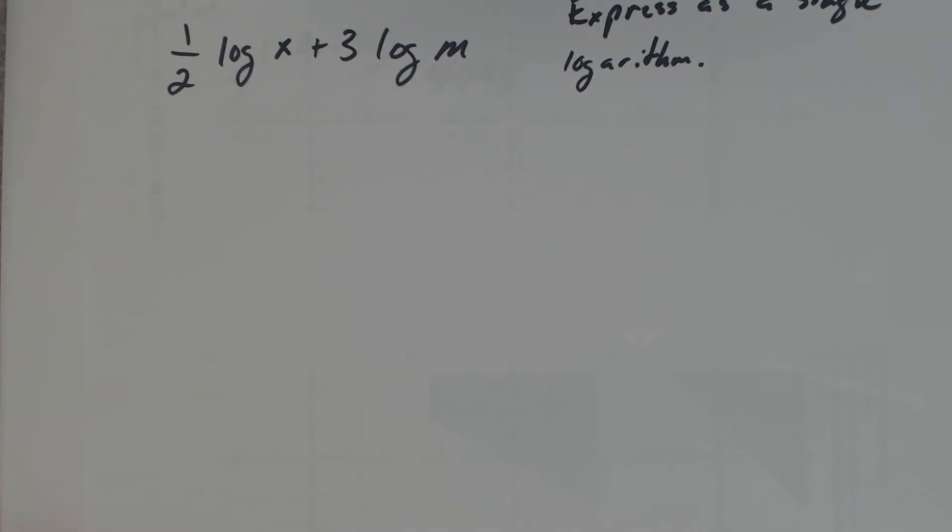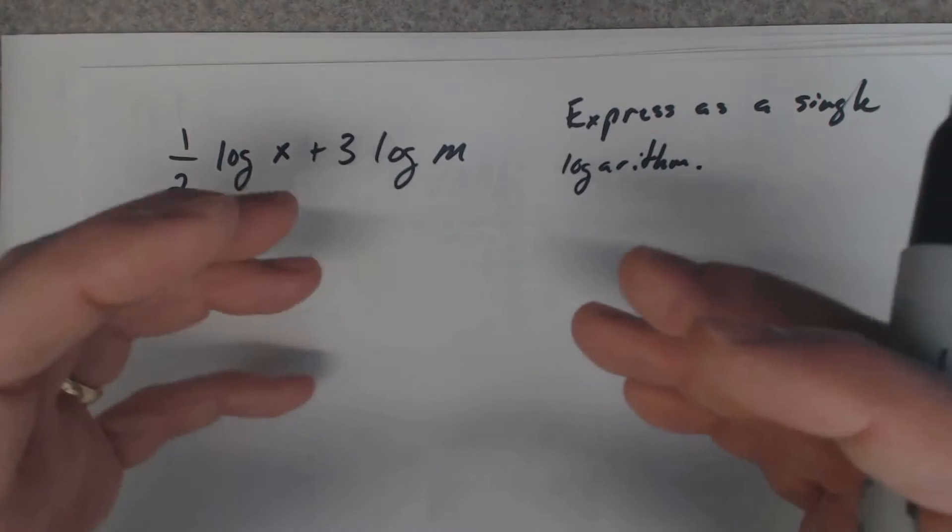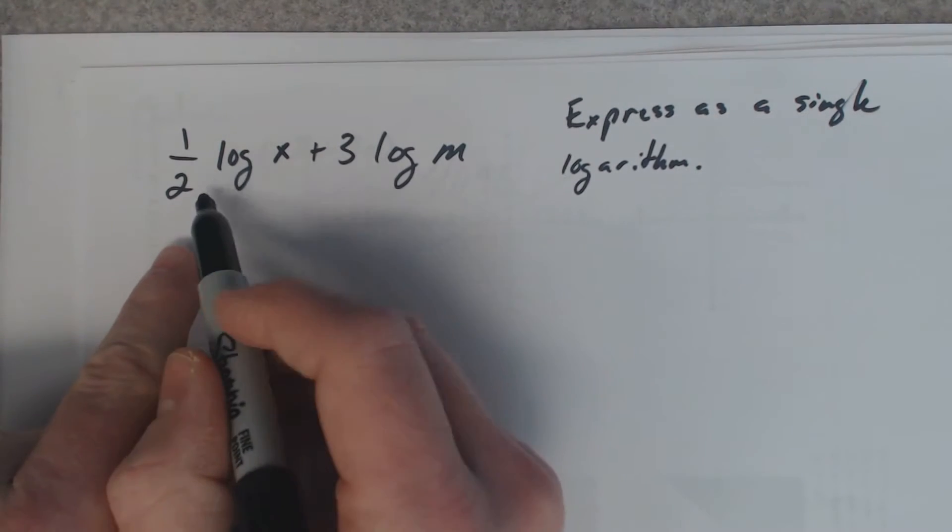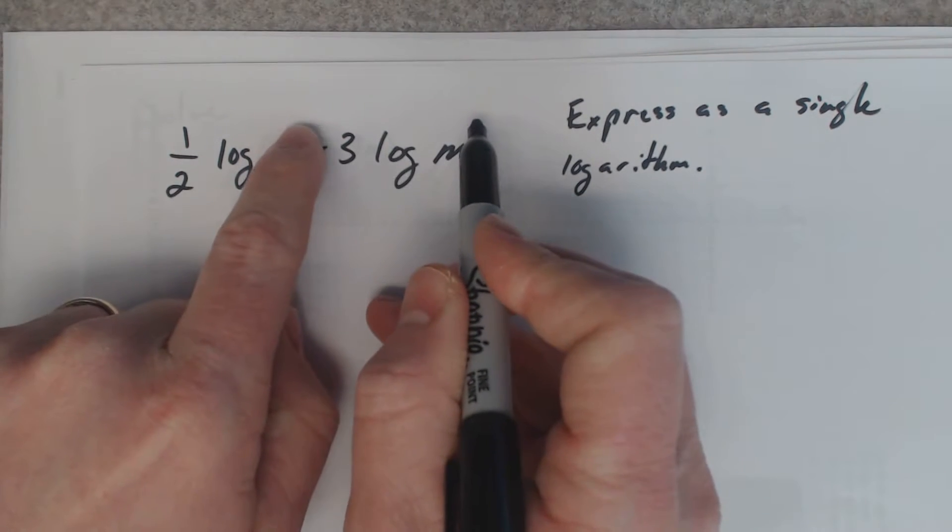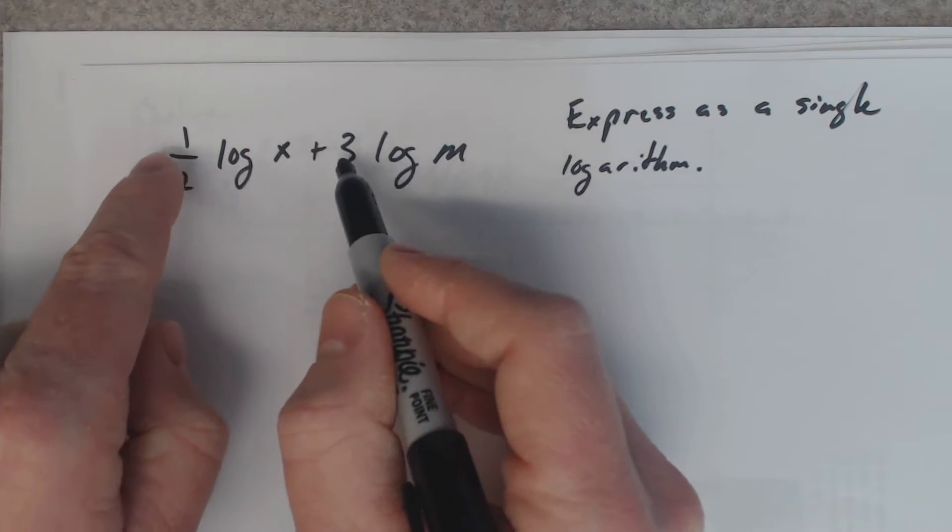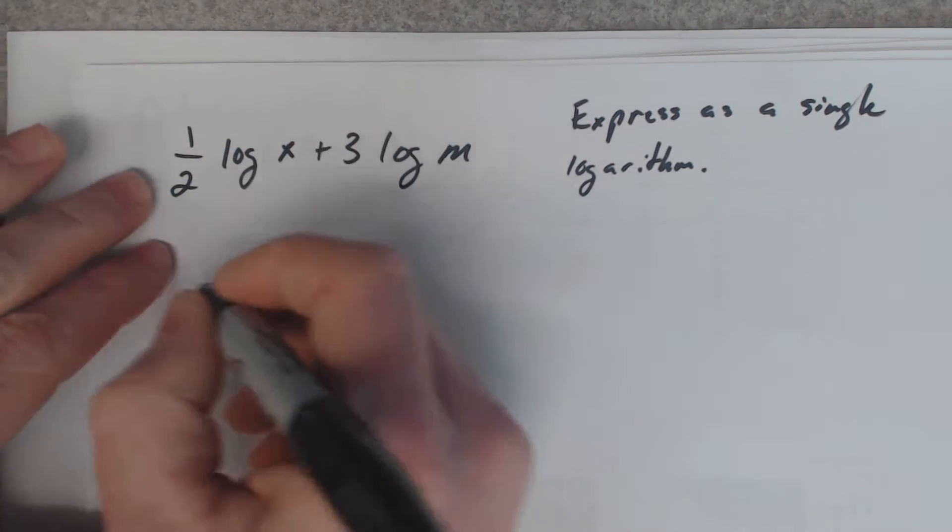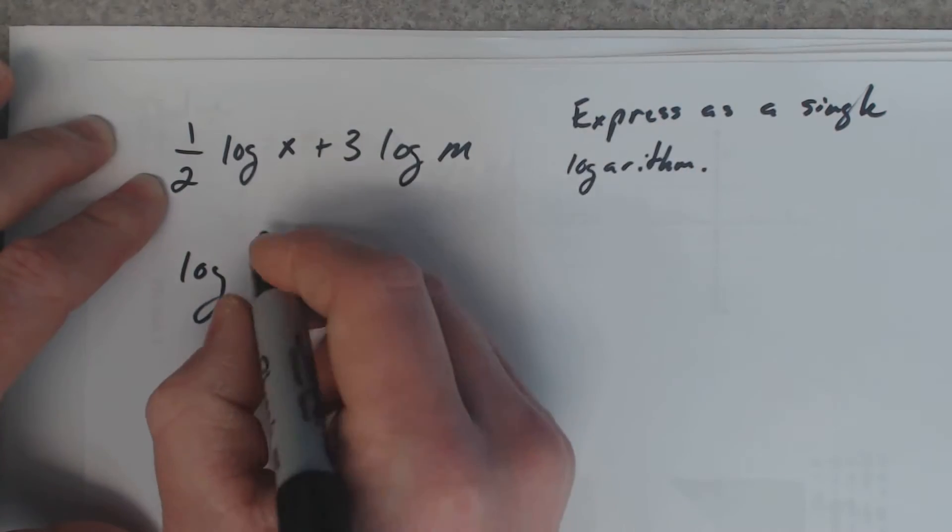Next question, you want to do it in reverse. They give you this expanded version and they want you to condense it back down to one logarithm. Remember what happens with these numbers in front? A second ago, I pulled them off as a power and put them up front. So now I'm going to reverse that and write them as powers. I'm going to bring that guy back up as a power. You've got to take care of that power stuff first in this case.